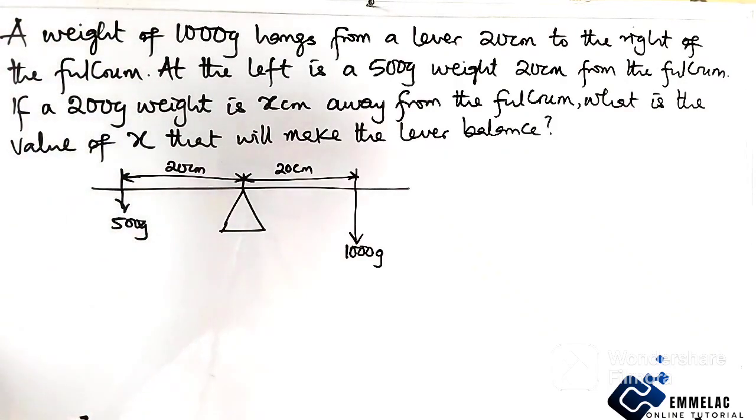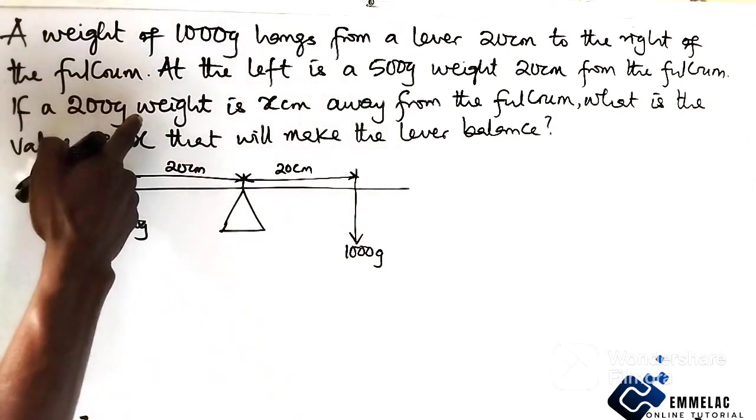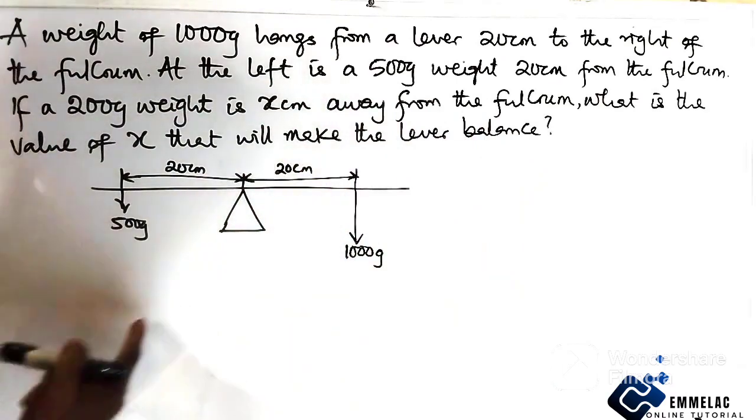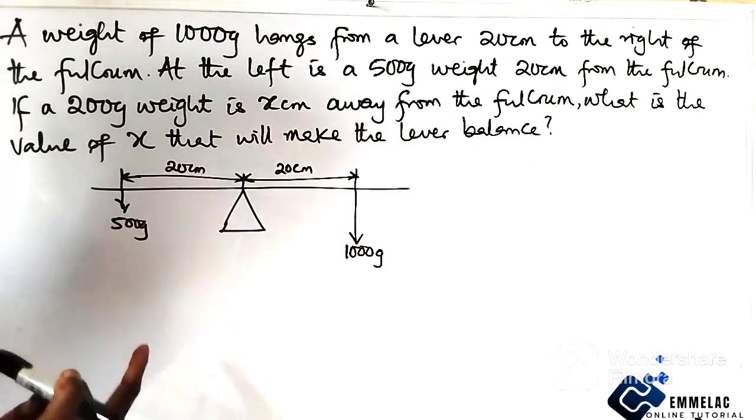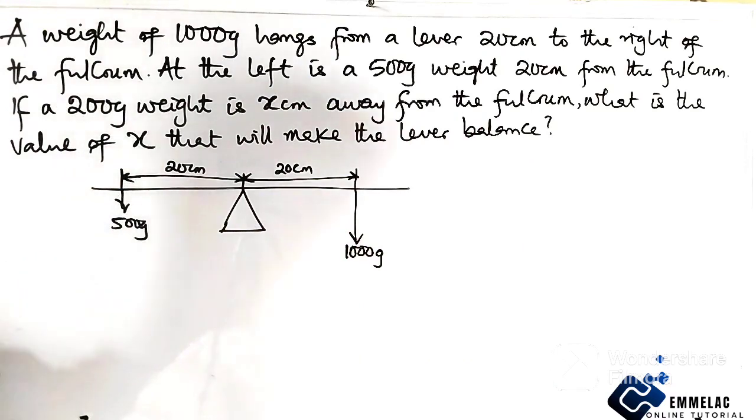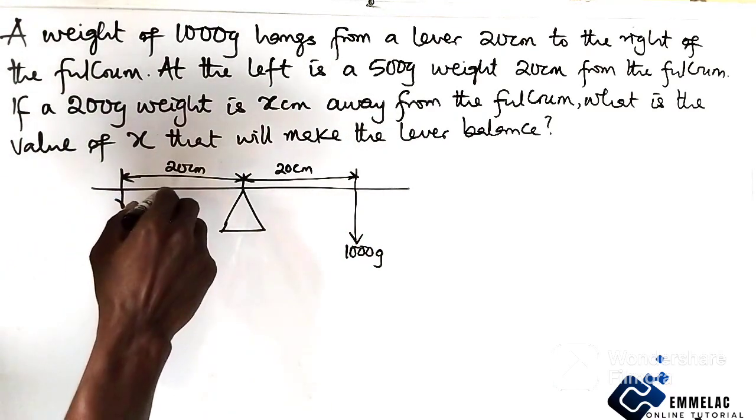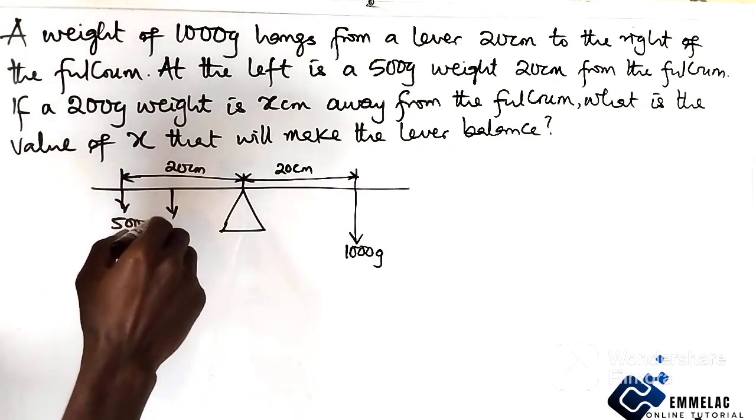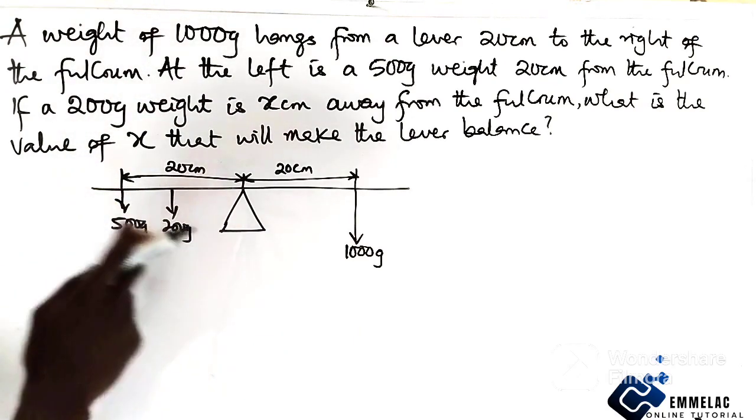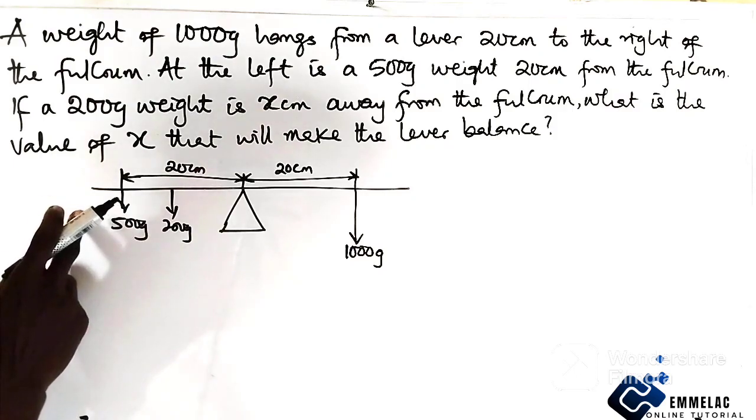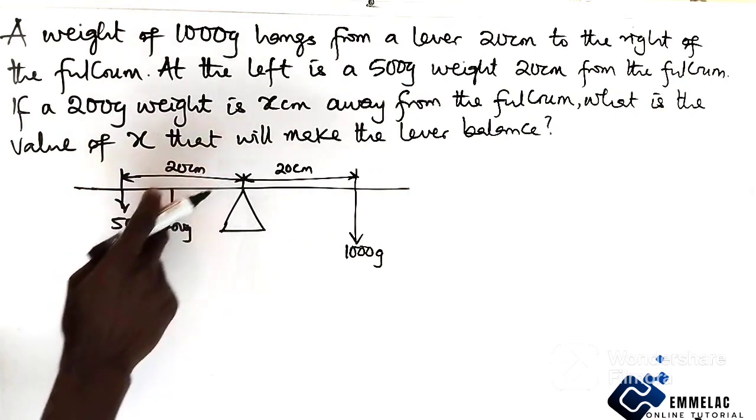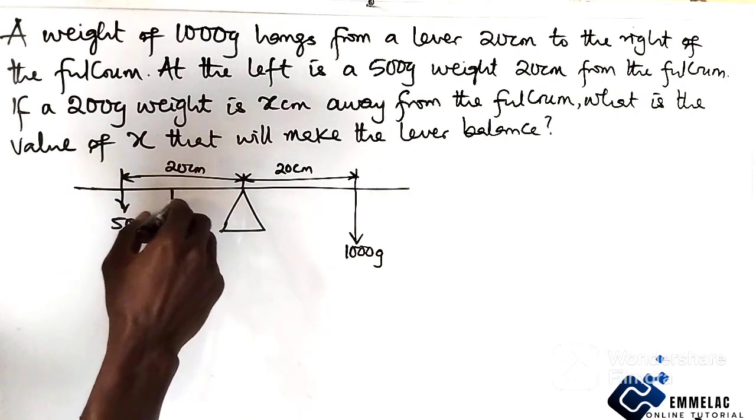Now we are told if a 200 gram weight is x centimeters away from the fulcrum. All right, from here we actually don't know either this or this, so what we need to do here now is maybe to fix it here, okay, which is 200 grams. Since it's 200 grams, probably most likely at the other hand, so it could be here or here depending on the distance we need to calculate.